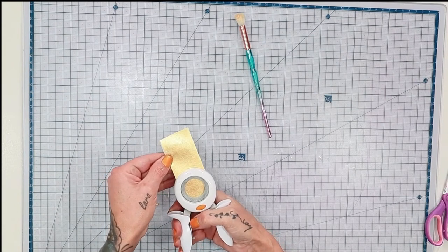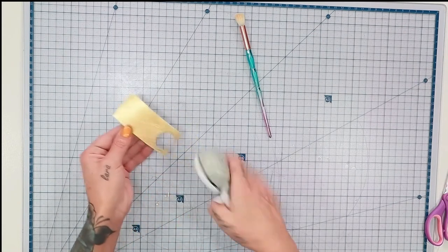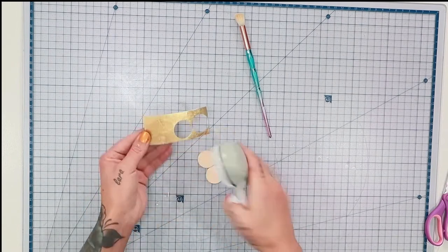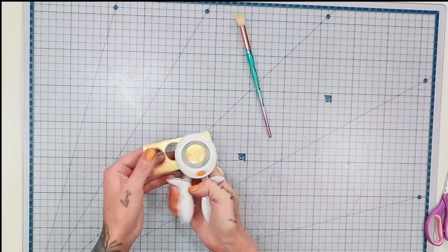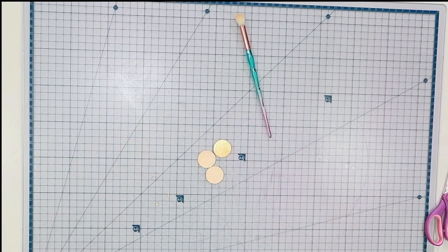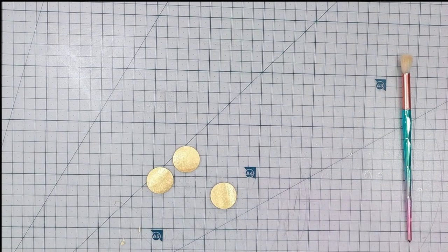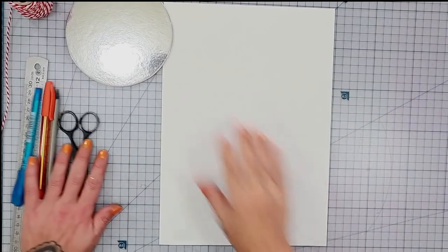I then cut the excess wafer paper off and take my one inch circle cutter and cut out some beautiful little polka dots. Perfect, gold, flat, gorgeous. Of course, I went ahead and made quite a few of those.